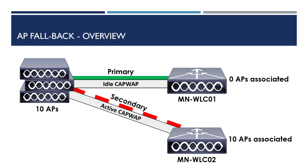With AP fallback enabled on our controller, APs will automatically rejoin their primary controller once it's back online and active. Now that we've got an understanding of AP fallback and what it aims to achieve, let's look at how we can configure it on our wireless controllers.